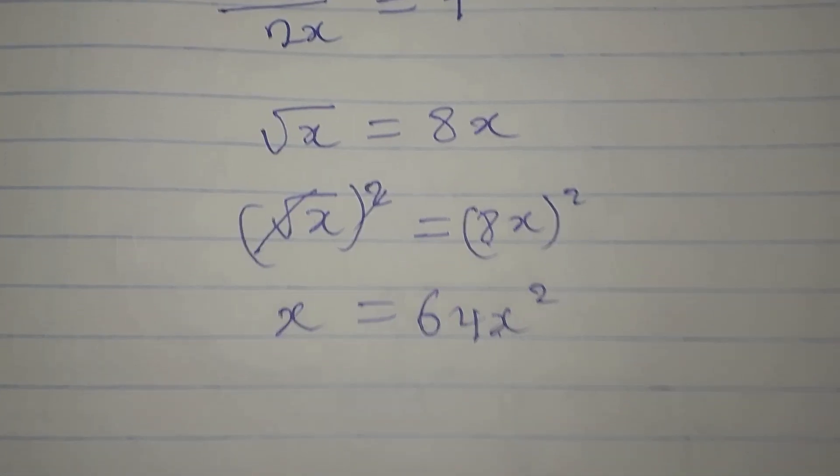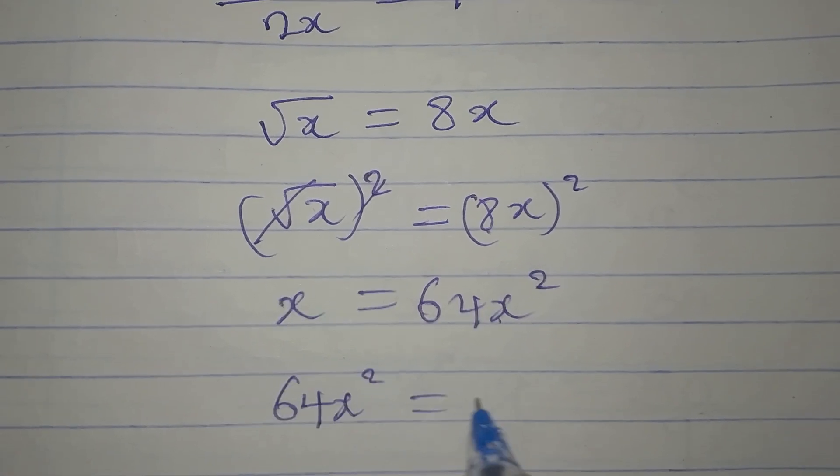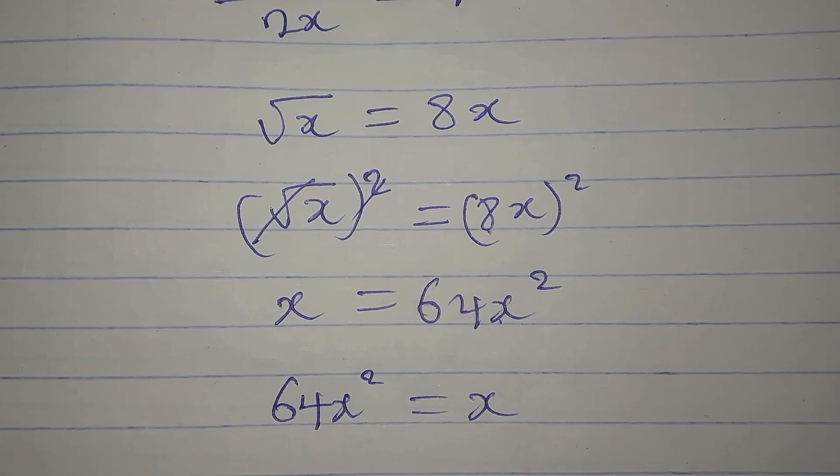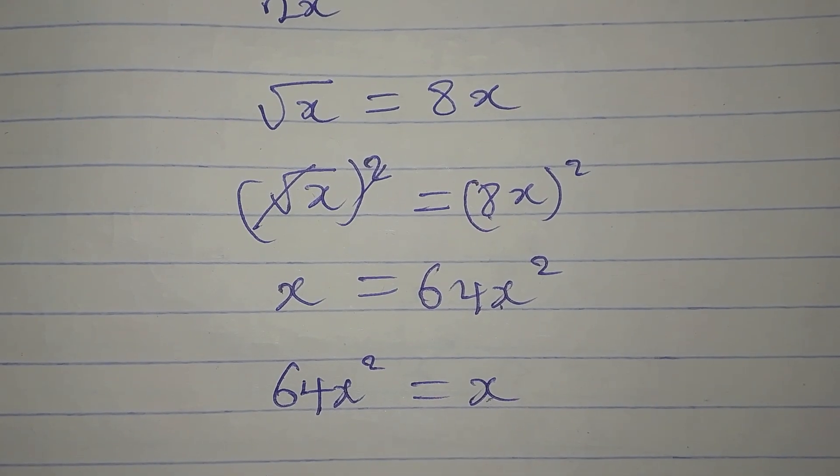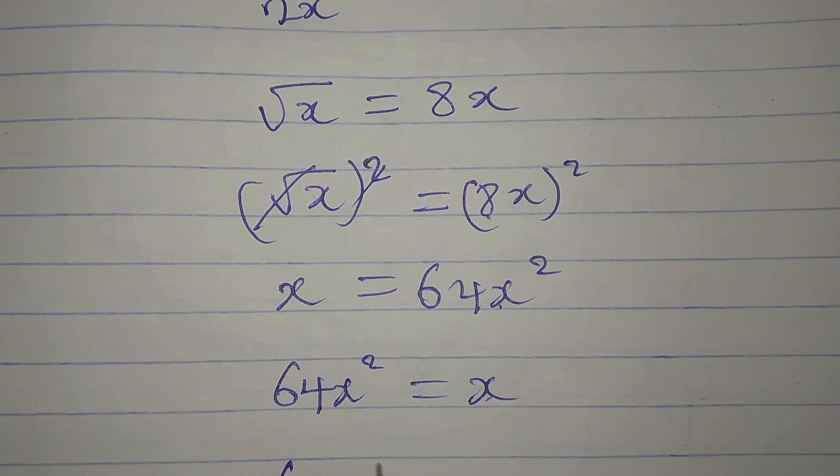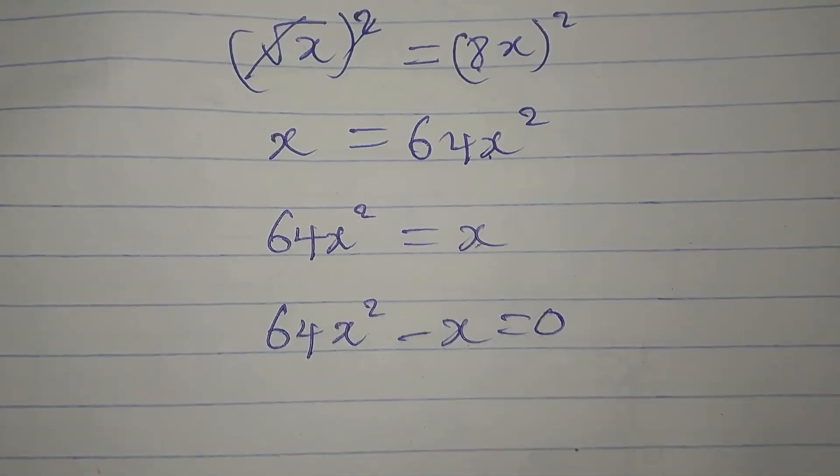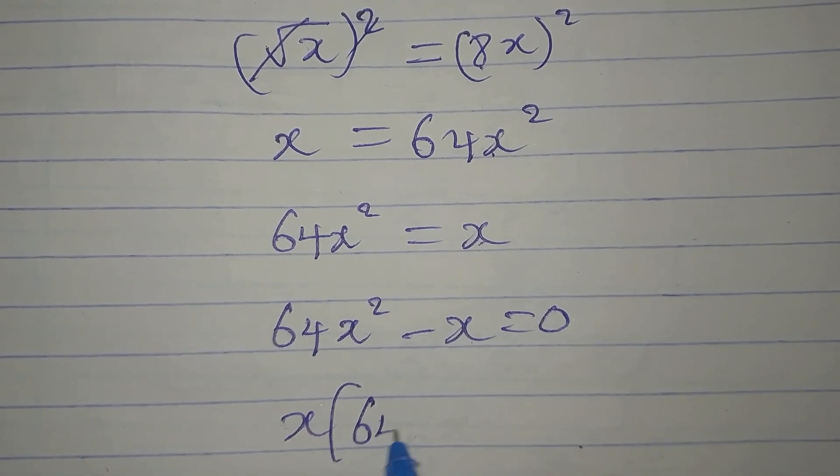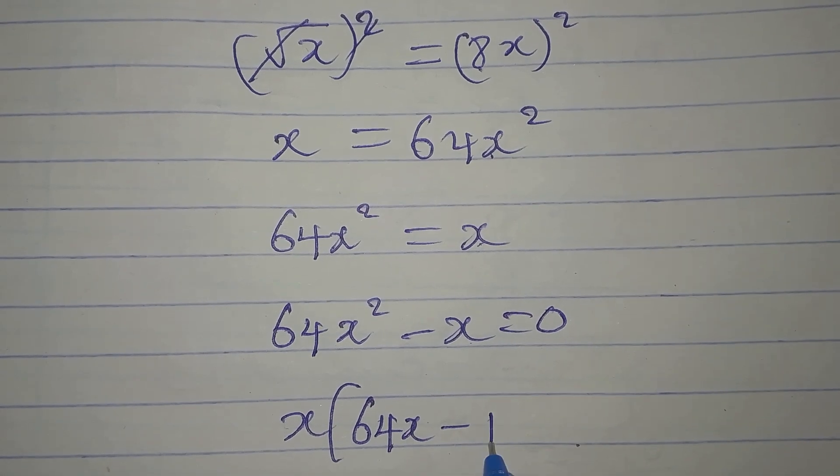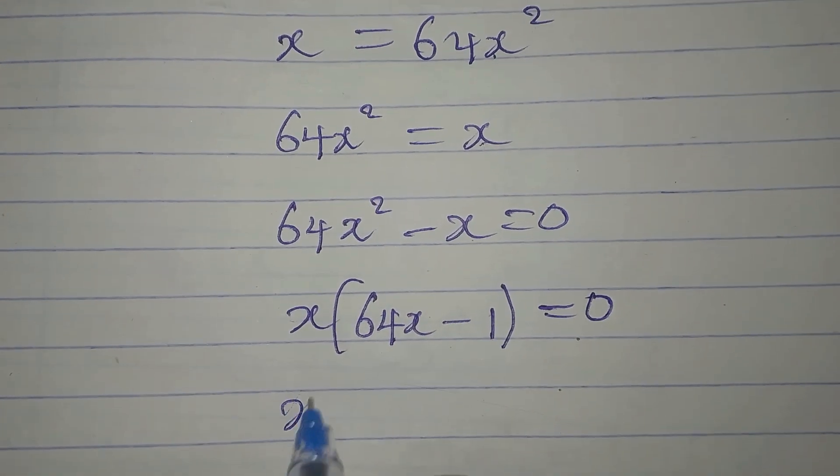We always write 64x squared before the x since it has the higher power. Bring this to the left so we have 64x squared minus x equals zero. What is common is x, so here we have x times 64x minus 1, and this is equal to zero.